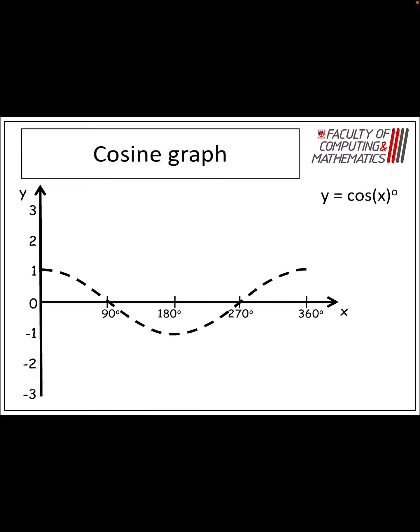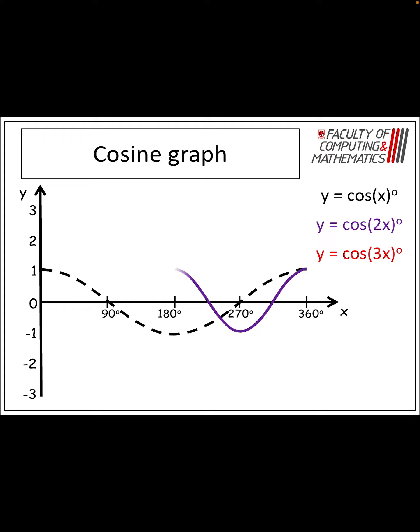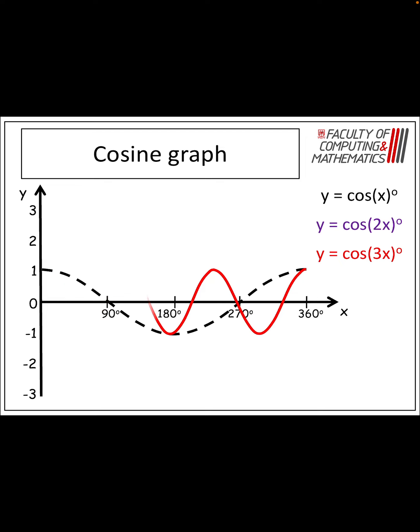Cosine is the same thing. If I've got cos of 2x, I want it to repeat itself twice — take 360, divide it by 2, I want the first full cycle up to 180 degrees, and then I want it to repeat. For 3x, take 360 divided by 3 — I want my first full cycle to 120 degrees, and then it repeats again, and I should have three full cycles up to 360 degrees.